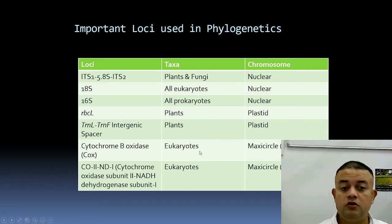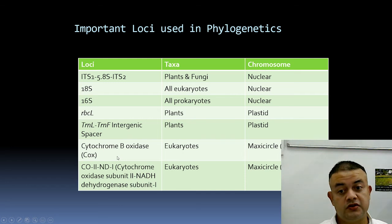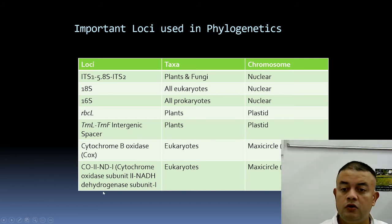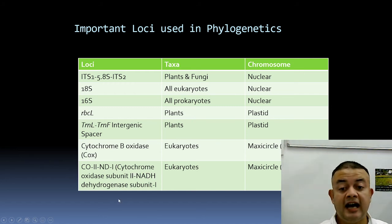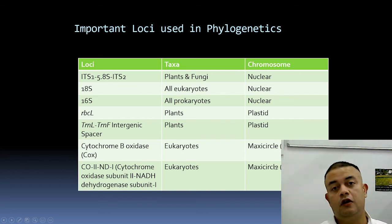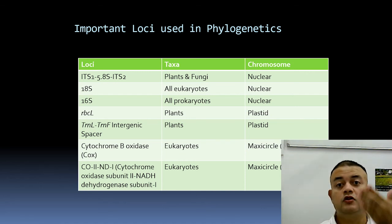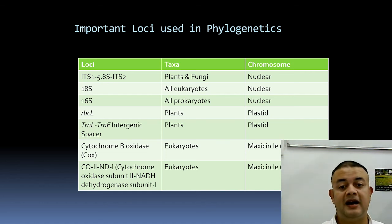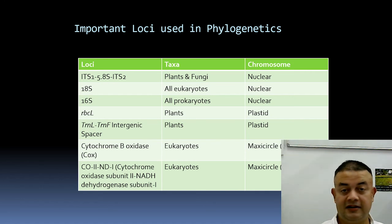For eukaryotes, COX (cytochrome oxidase) is used for animals and red algae — specifically COX2-ND1 spacer region (cytochrome b oxidase subunit 2 and NADH dehydrogenase subunit 1). Both are coded in the maxicircle of the mitochondrial DNA. So we have three genomes — nuclear, plastid, and mitochondrial — each with several loci to choose from.